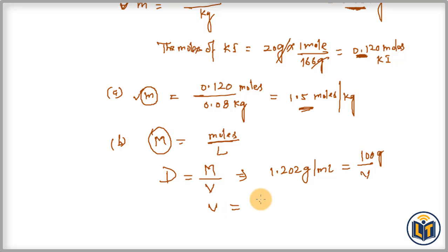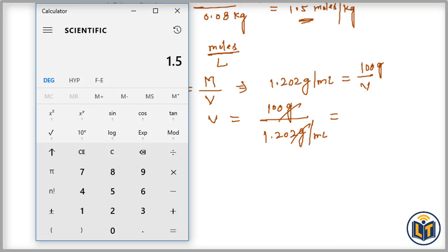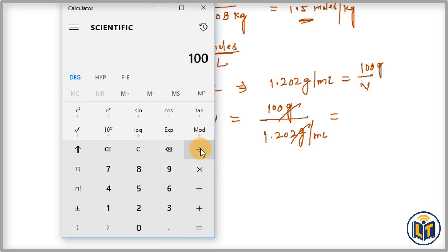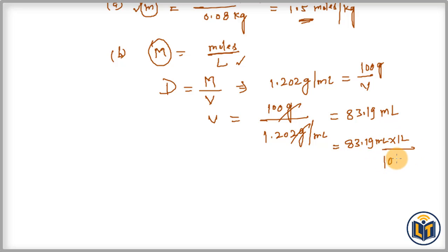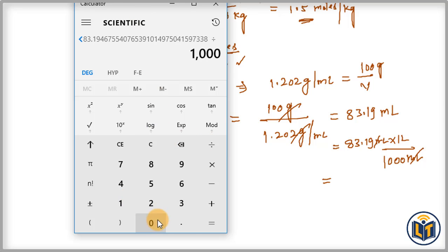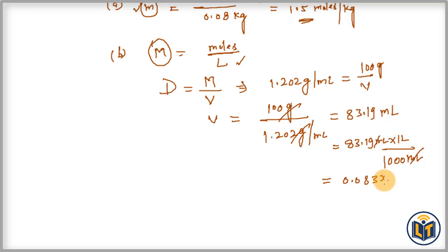Solving for volume: volume equals 100 grams divided by 1.202 g/mL — grams cancel — giving us 83.19 mL. Since we need the volume in liters, we convert: 83.19 mL multiplied by (1 L / 1000 mL) — mL cancels — giving us 0.0832 liters. This is the volume of the solution.